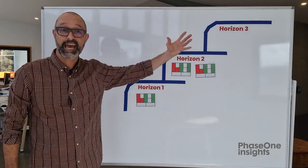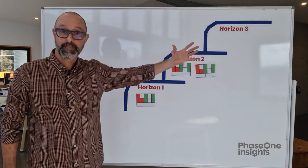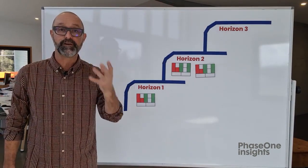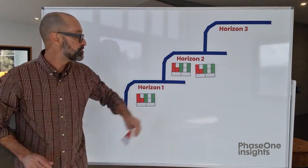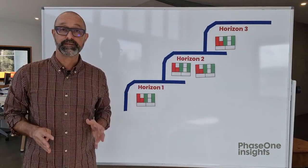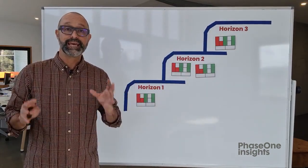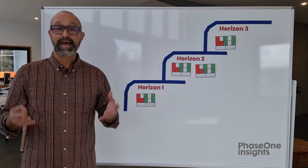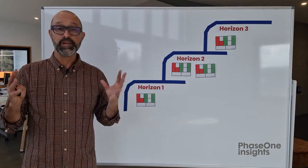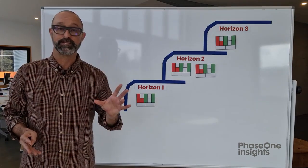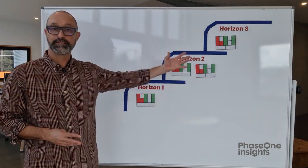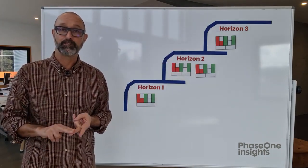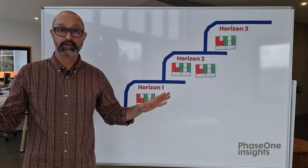Horizon 3 is where things get really interesting. This is the space of crazy, off-the-wall innovations that require you to develop totally new business models. This is a tough space to play in, but some companies do it extremely well. Amazon, for example, got its start as an online bookseller but has subsequently achieved near-monopoly status in several industries off the back of its remarkable ability to develop disruptive new business models — Amazon Web Services, Amazon Prime, Kindle — the list goes on.